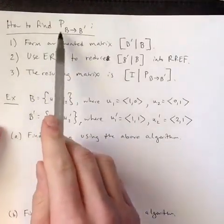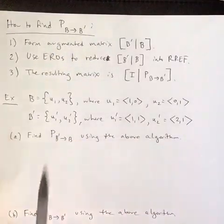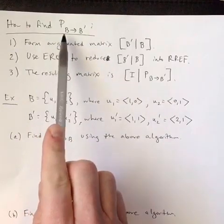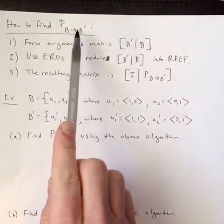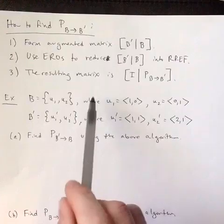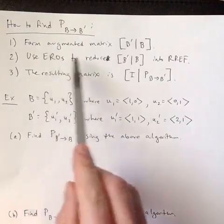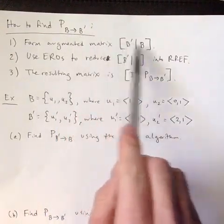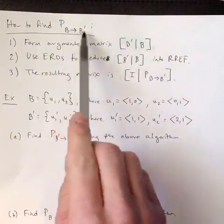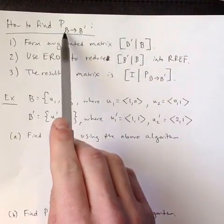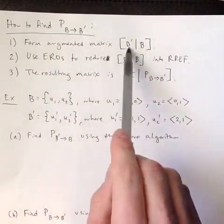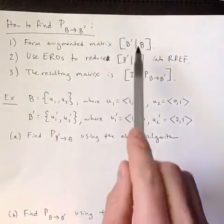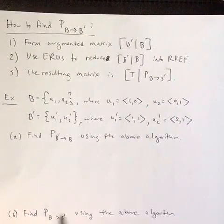The way I've set it up here, which is the same as in the notes, this is a transition matrix from basis B to basis B prime. The first thing you do is form an augmented matrix where you write the two matrices in reverse order. So if you're changing from B to B prime, put B prime first and B second. Form that augmented matrix in that way.